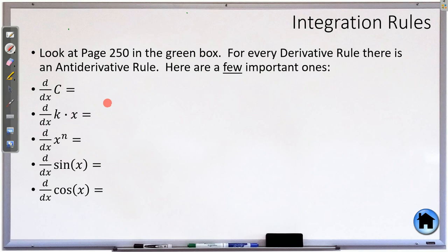So because we're going backwards, if you know a derivative rule, you know an antiderivative rule. So here's our derivative rule: if we take the derivative of a constant, it equals zero. Well that means if I take the antiderivative of zero, I must get back to that constant.